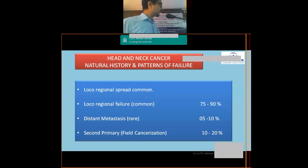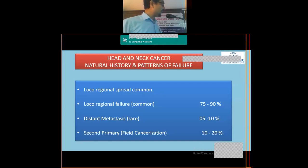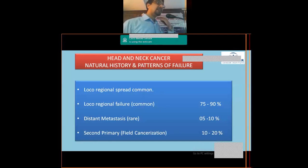Second primaries occur in around 10 to 20 percent of patients, also called field cancerization. This term denotes that a common etiological factor — such as tobacco exposure — is responsible for multiple cancers. Tobacco is also responsible for esophageal and gastric cancers, so field cancerization means a common etiological factor leading to multiple cancers.